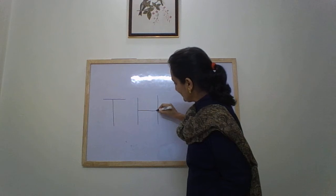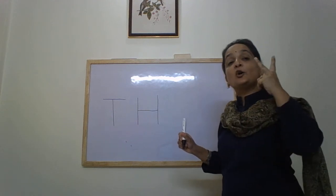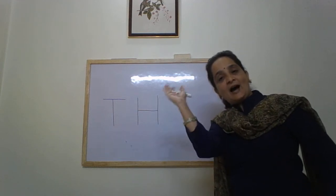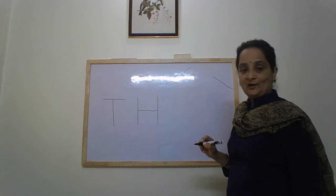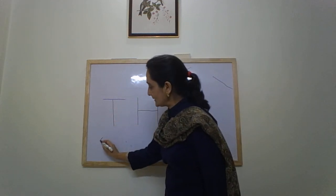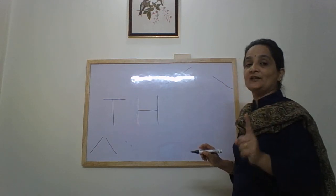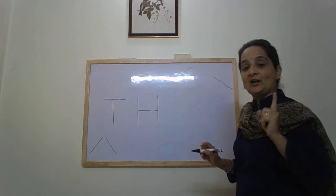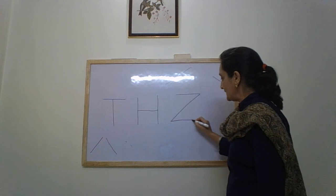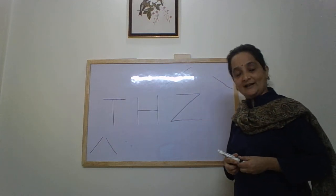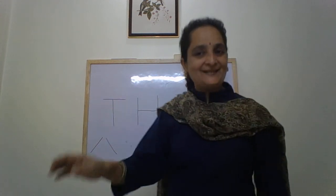And the last letter is Z. We write Z with the help of two sleeping lines and one slanting line. Letter Z is written with: sleeping line, slanting line, and sleeping line. This is letter Z. Practice it every day and learn to write it independently. Bye bye!